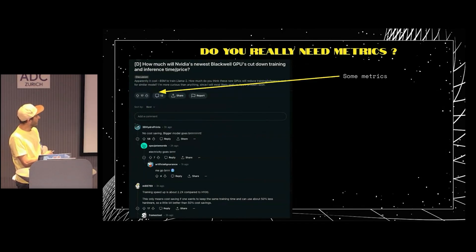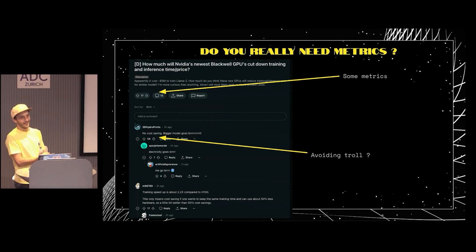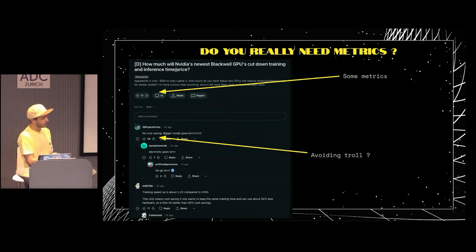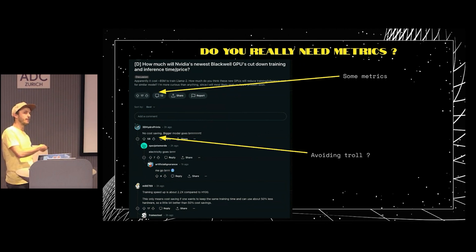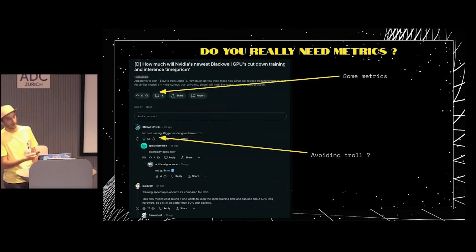You have the number of comments, upvotes, and downvotes, but you also need to be able to avoid trolls. A simple troll post might get a lot of upvotes, but based on my experience, troll posts don't get a lot of engagement or comments, because it's just a fun joke. So that's a calculation matrix you can apply.